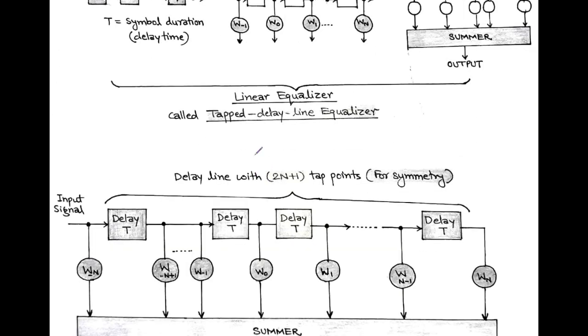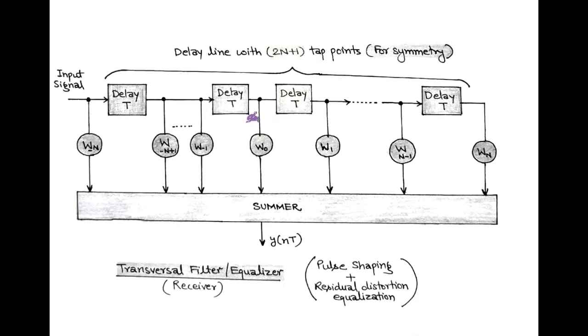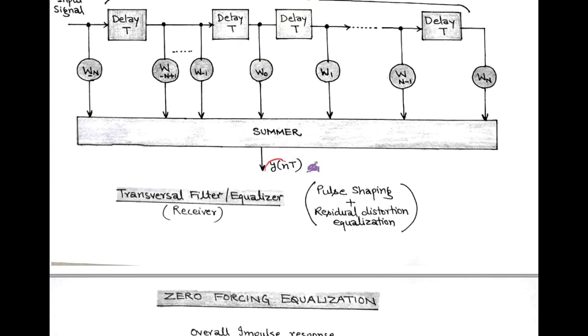Here, to consider symmetry, we design a delay line with 2n+1 tap points. Each tap is connected with adjustable weights with values w minus n, w minus n plus 1, up to w0, and then w1, w2, up to w n minus 1, wn. After this, the delayed and weighted version of input signal get added using summer and we get equalized output signal denoted by y function nT.